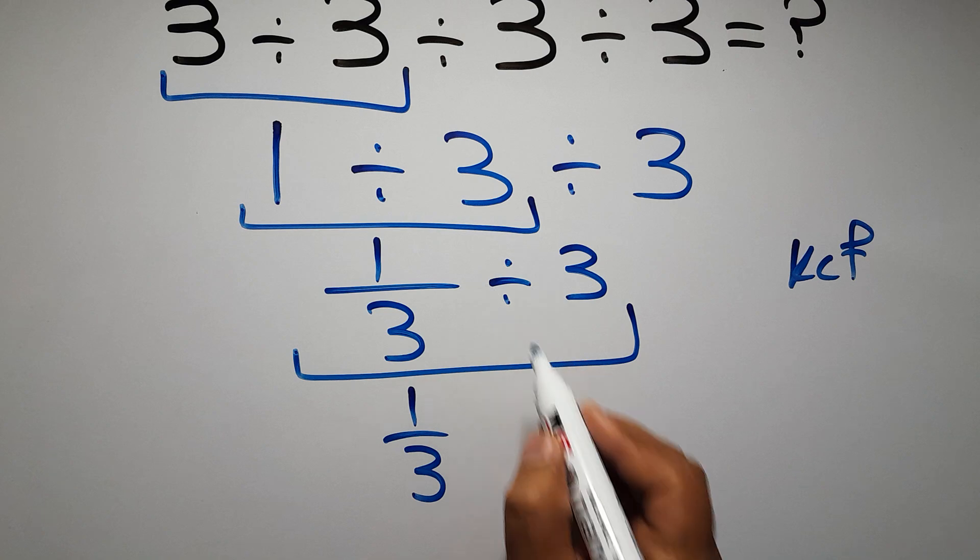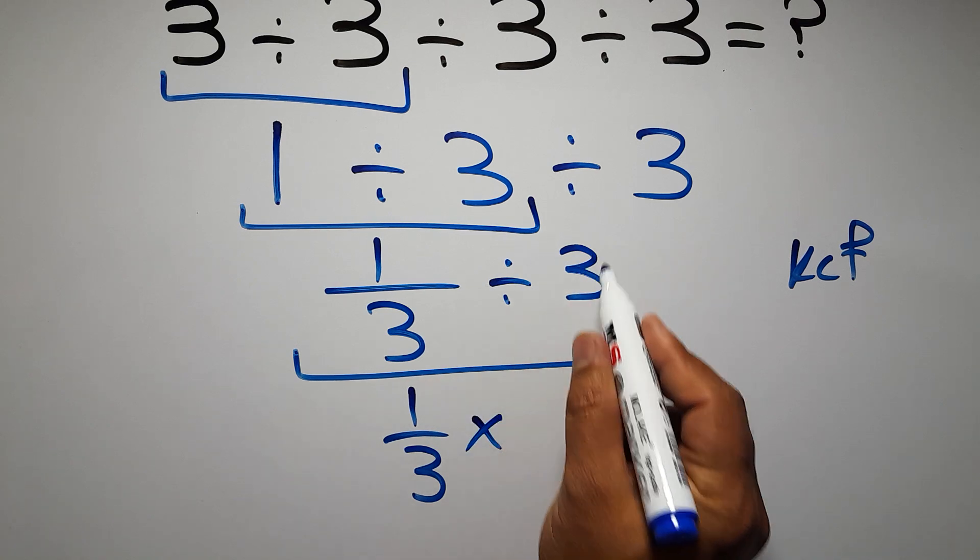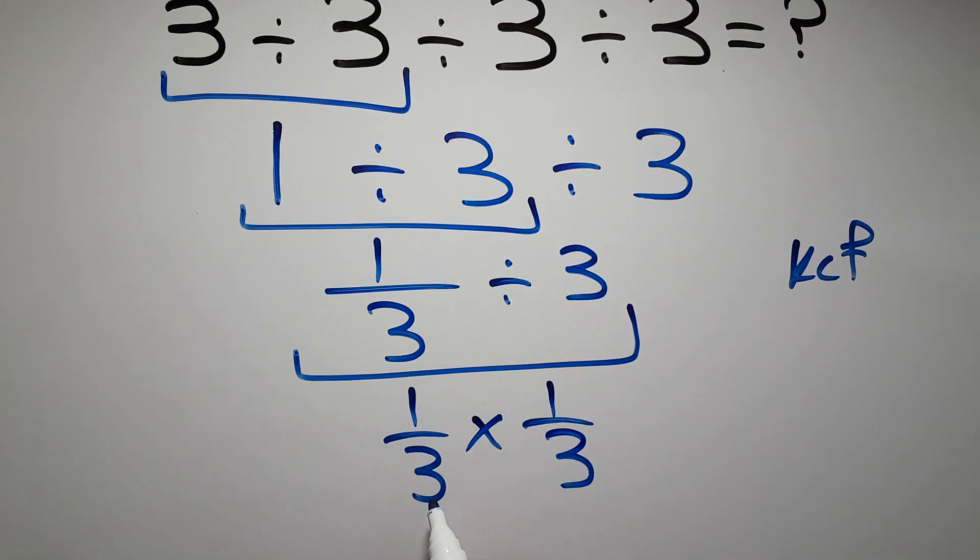change division to multiplication, and flip the second fraction. So we have 1 over 3 times 1 over 3, which